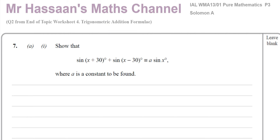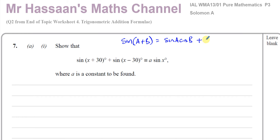There are formulae in the formula book for which there is a proof, but we don't need to go through that. You should know the formula for the expansion of sin(A+B) and sin(A−B), and also cos(A+B) and cos(A−B). For sin(A+B), the formula book gives: sin(A+B) = sin A cos B + cos A sin B. Combined with this, sin(A−B) = sin A cos B − cos A sin B. We need both of these formulae here.